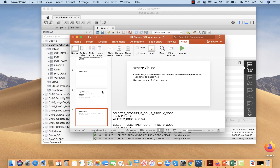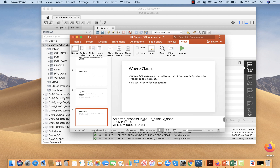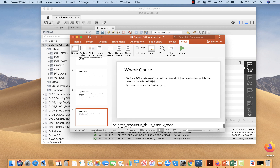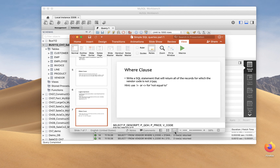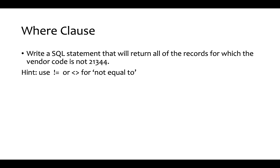Now I'm going to show you another query: write a SQL statement that will return all records for which the vendor code is not 21344. You can use two operators — either not equal to using the '<>' symbol, or the '!=' symbol — and I will show you both.